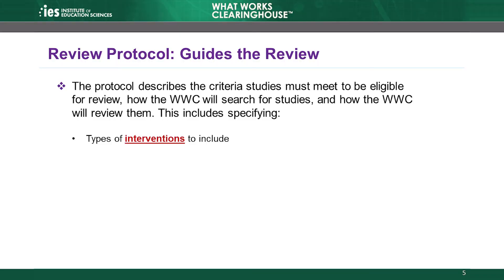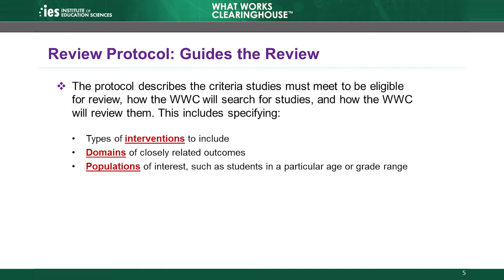First, the protocol describes the types of interventions eligible for review under that topic area. These can include programs, products, practices, or policies. Second, the protocol defines the outcome measures that are eligible for review and groups them into sets of closely related measures called outcome domains. Third, the protocol defines the criteria that studies must meet to be eligible for review, such as specifying the populations of interest to the review.